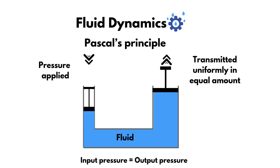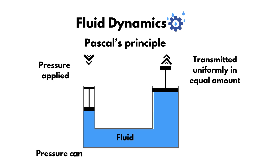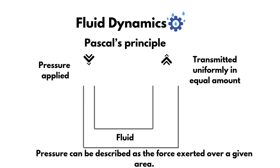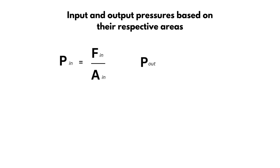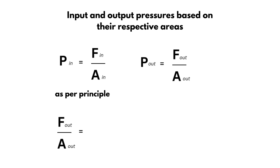It is an accepted fact that pressure can be described as the force exerted over a given area. We can now define the input and output pressures based on their respective areas: input pressure equals input force divided by input area, and output pressure equals output force divided by output area. As per the principle, output force divided by output area equals input force divided by input area.